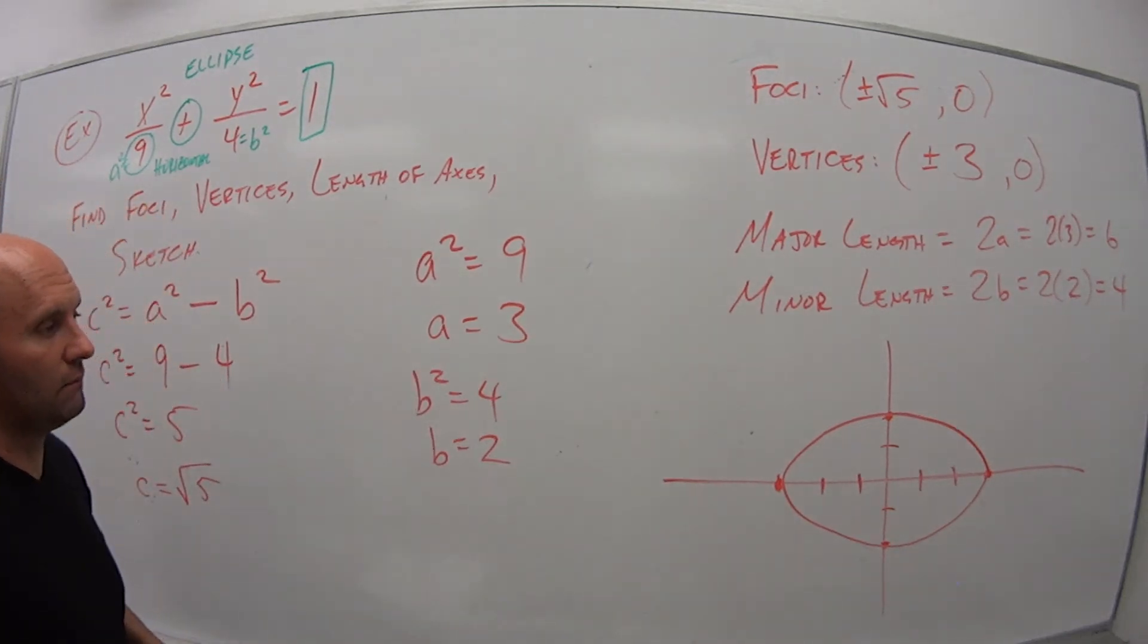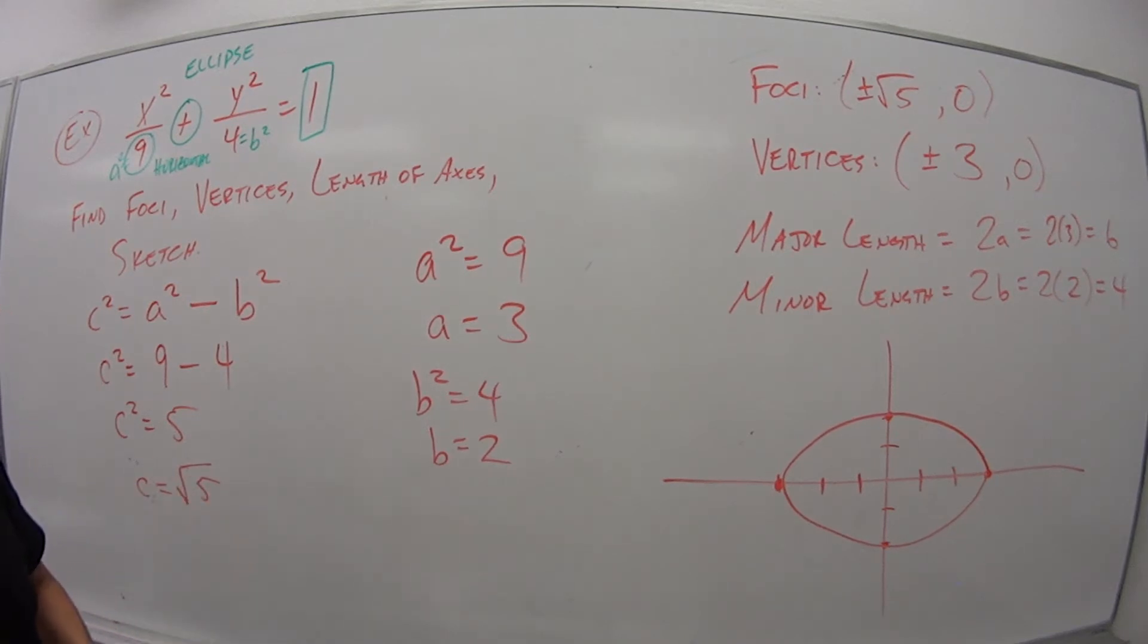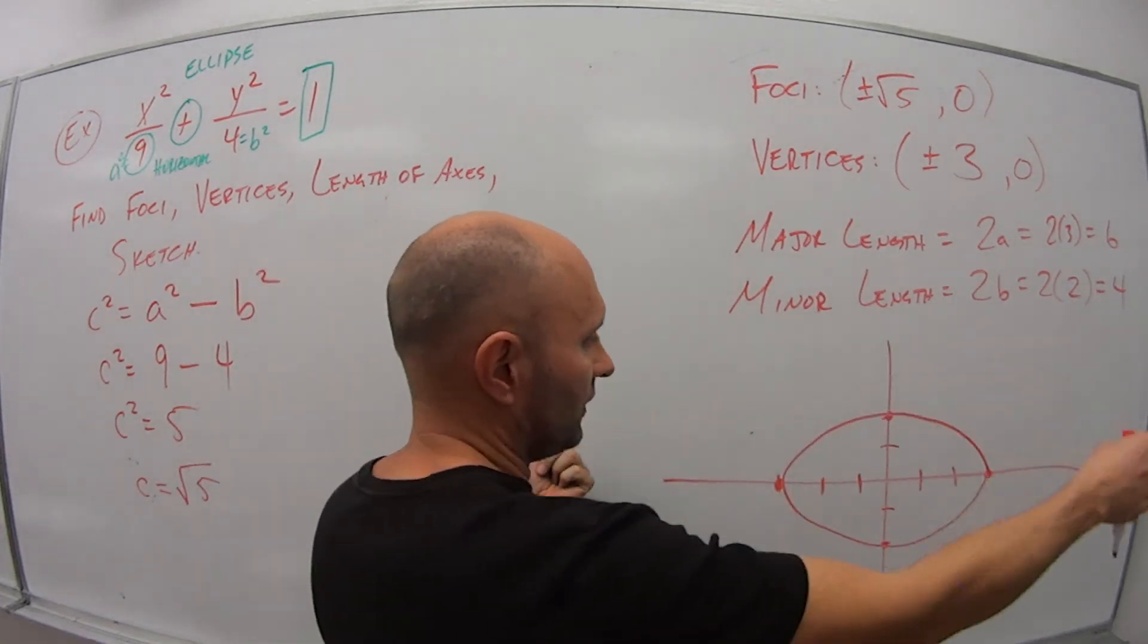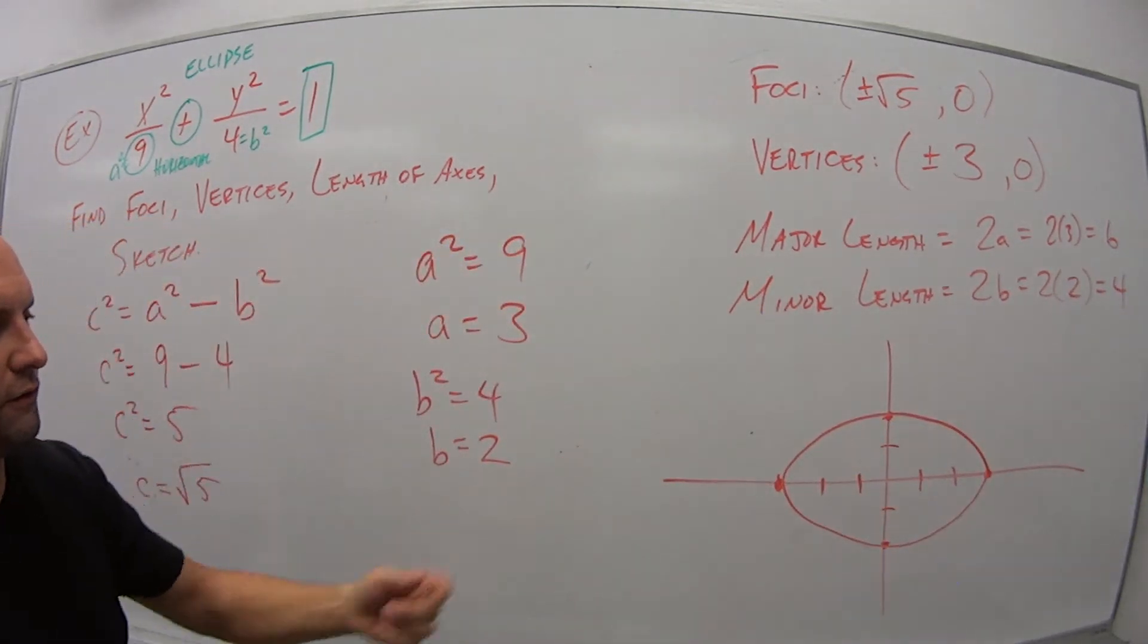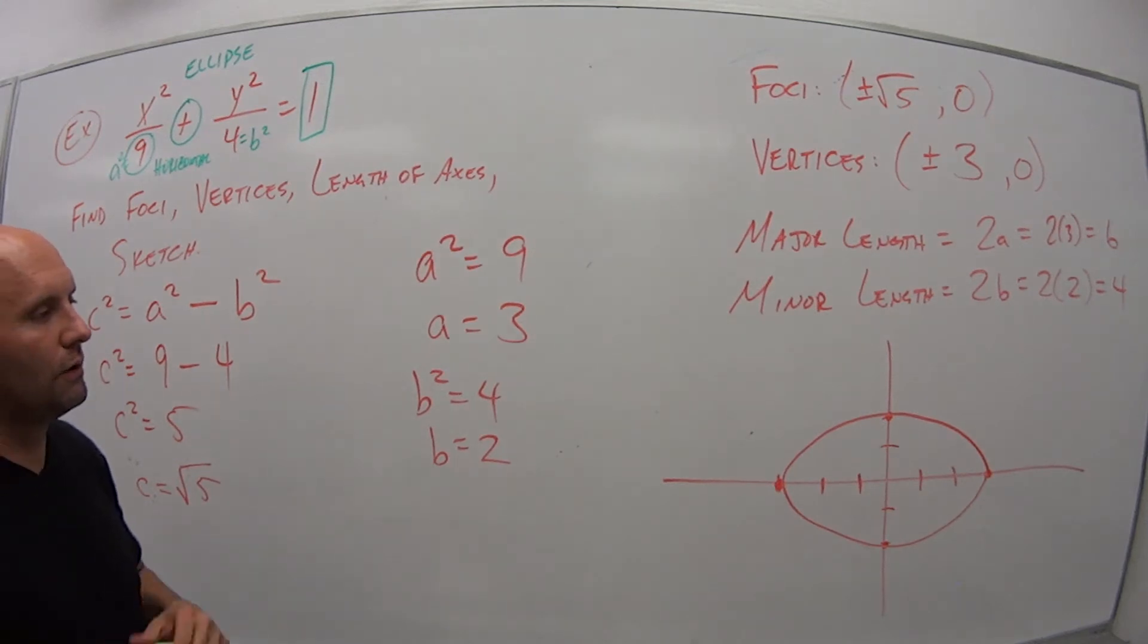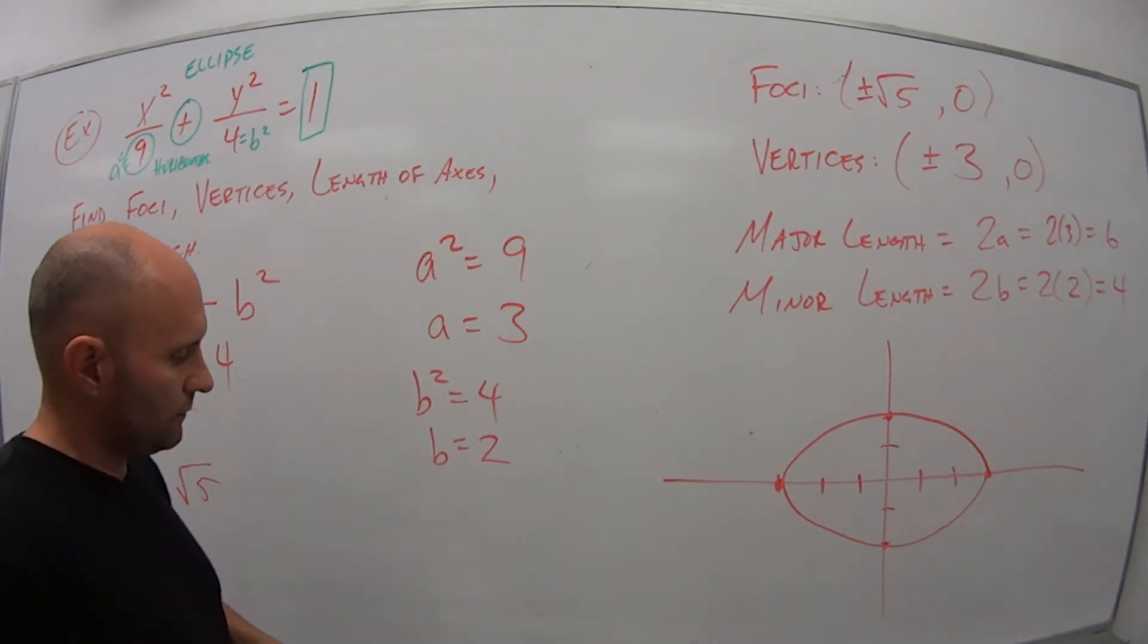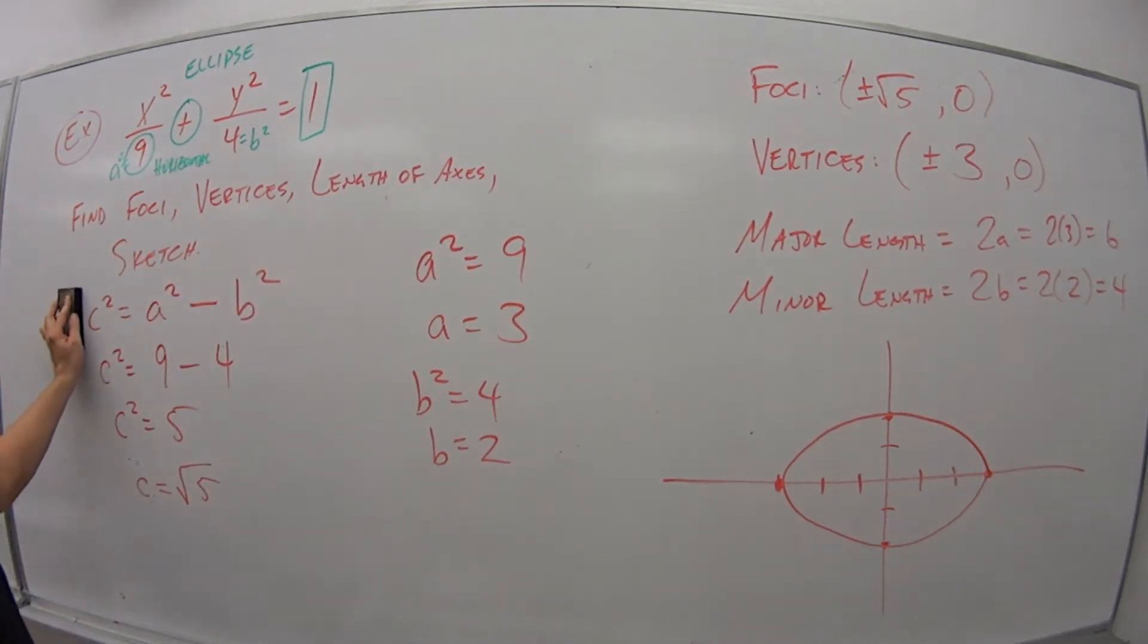And that's really it. We're not asked to put the foci in there or anything like that. We just want a sketch of what this looks like. It's a horizontal ellipse, 6 units long, 4 units wide. So my vertices are at plus or minus 3, 0. If you need to pause, go ahead. I'm going to erase this, and we'll get on with our second example.